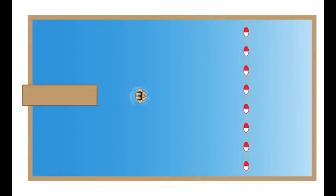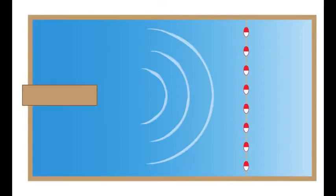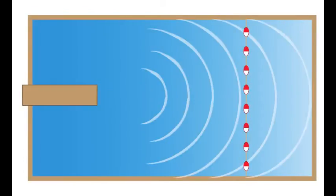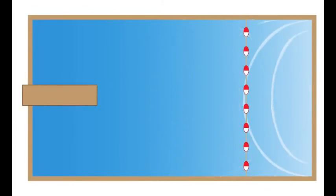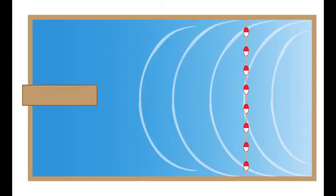Imagine jumping into a pool. The wave hits the side of the pool and bounces back. This is called reflection. When the front of the wave meets a barrier it cannot go through or over, it will be reflected.